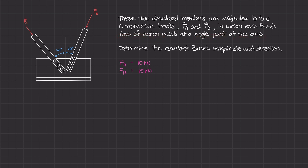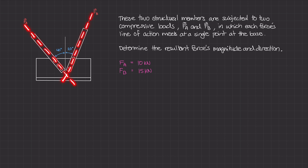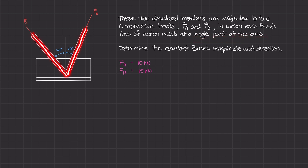The line of action is the line along which a force passes through. For F-B, its line of action goes along that structural member, and for F-A, its line of action goes along its structural member. The point where they meet is right there, and we call that point P. These two lines of action meet at point P.